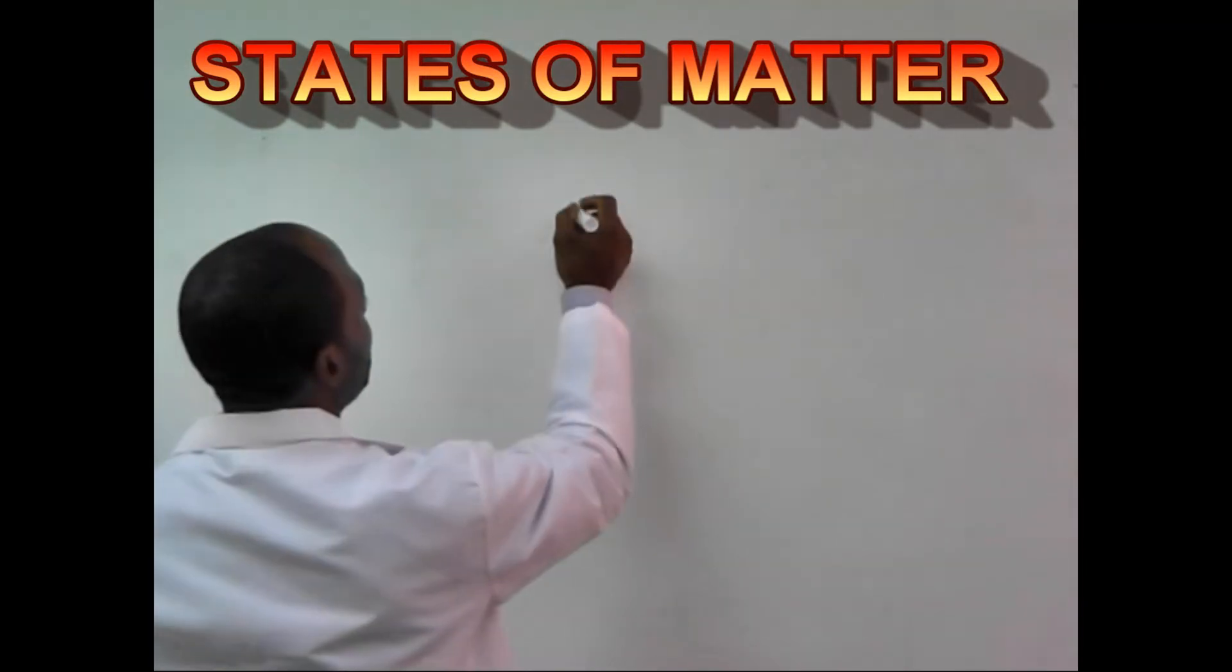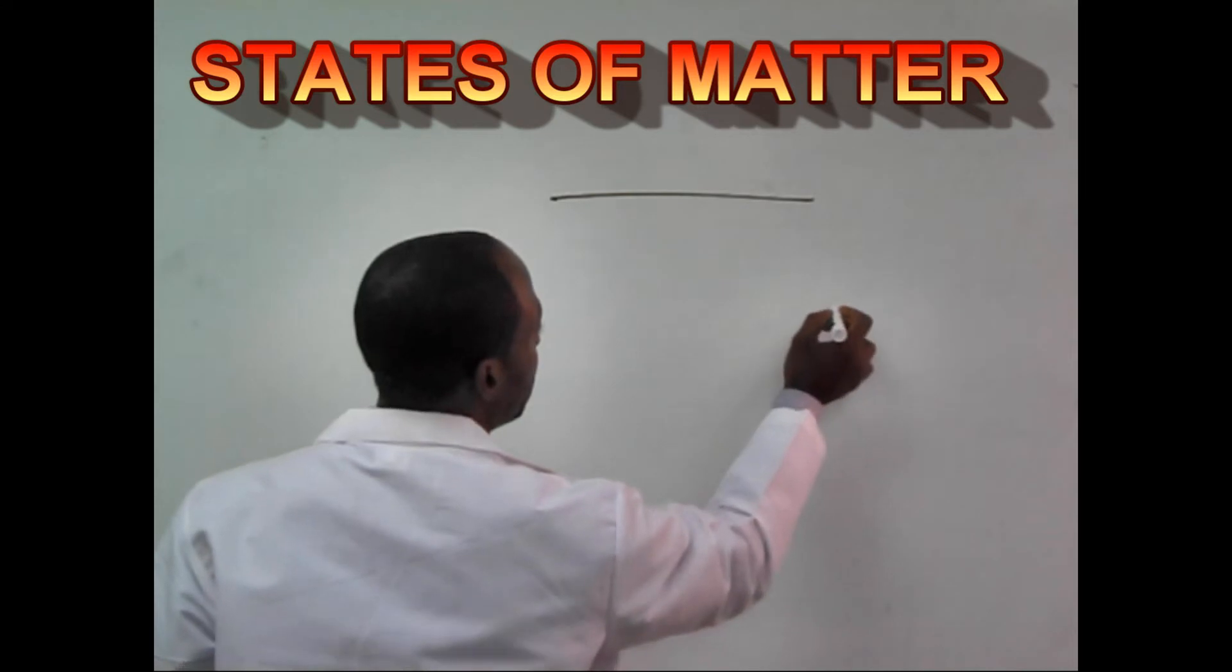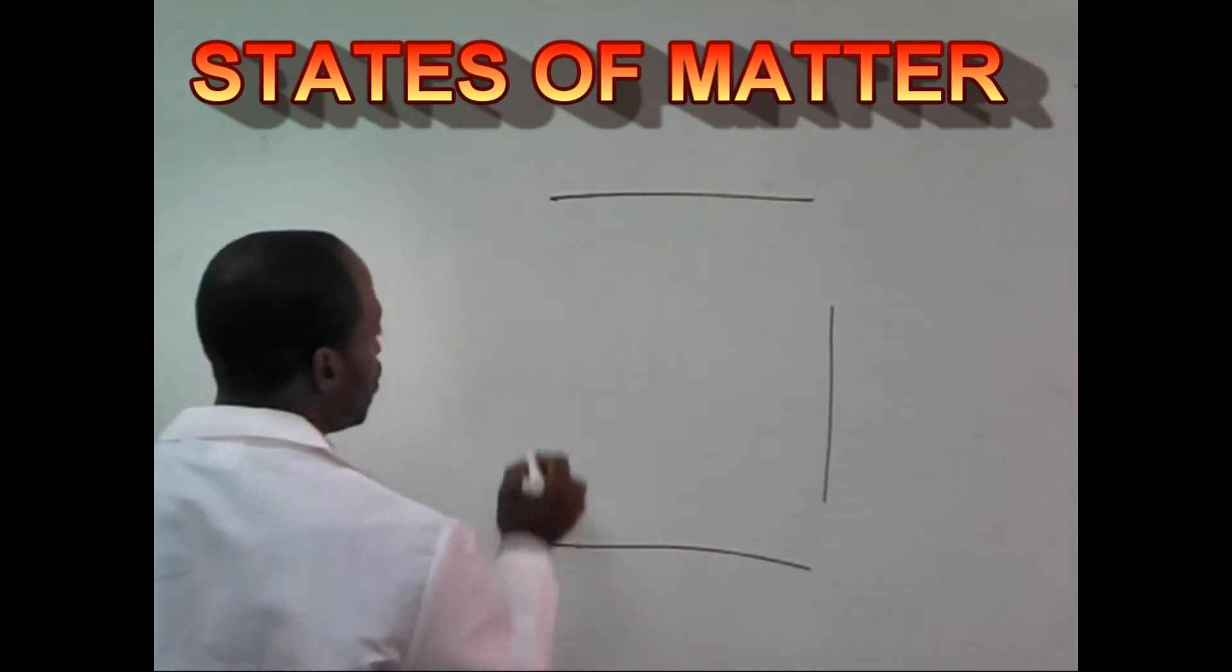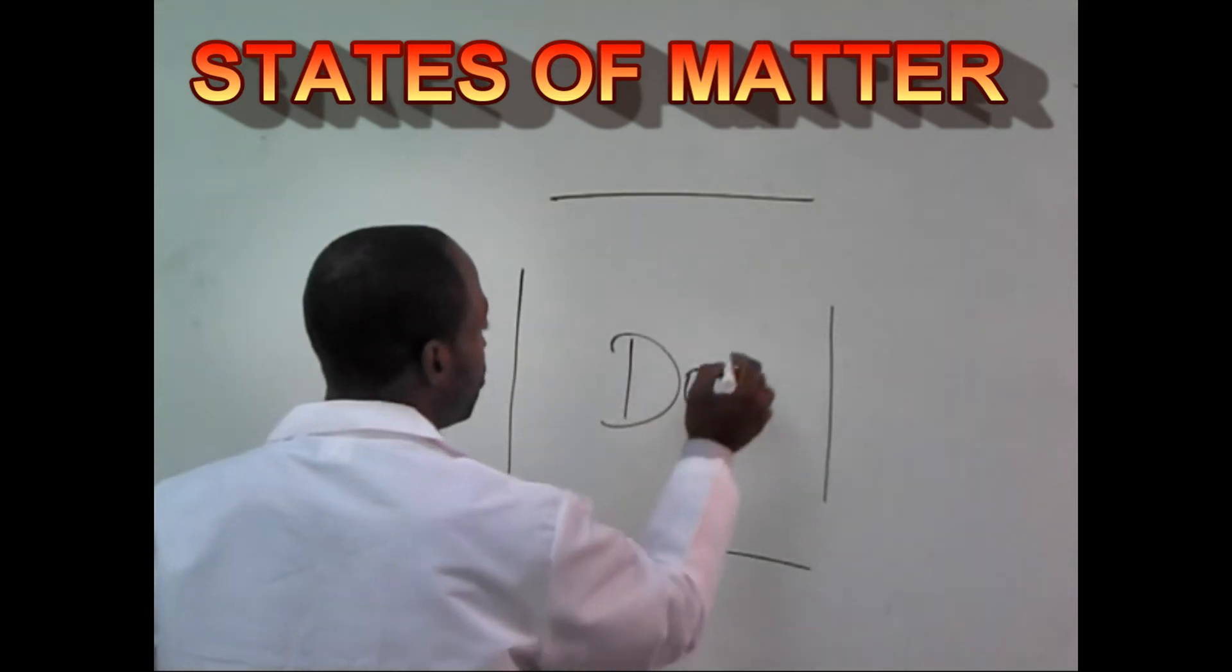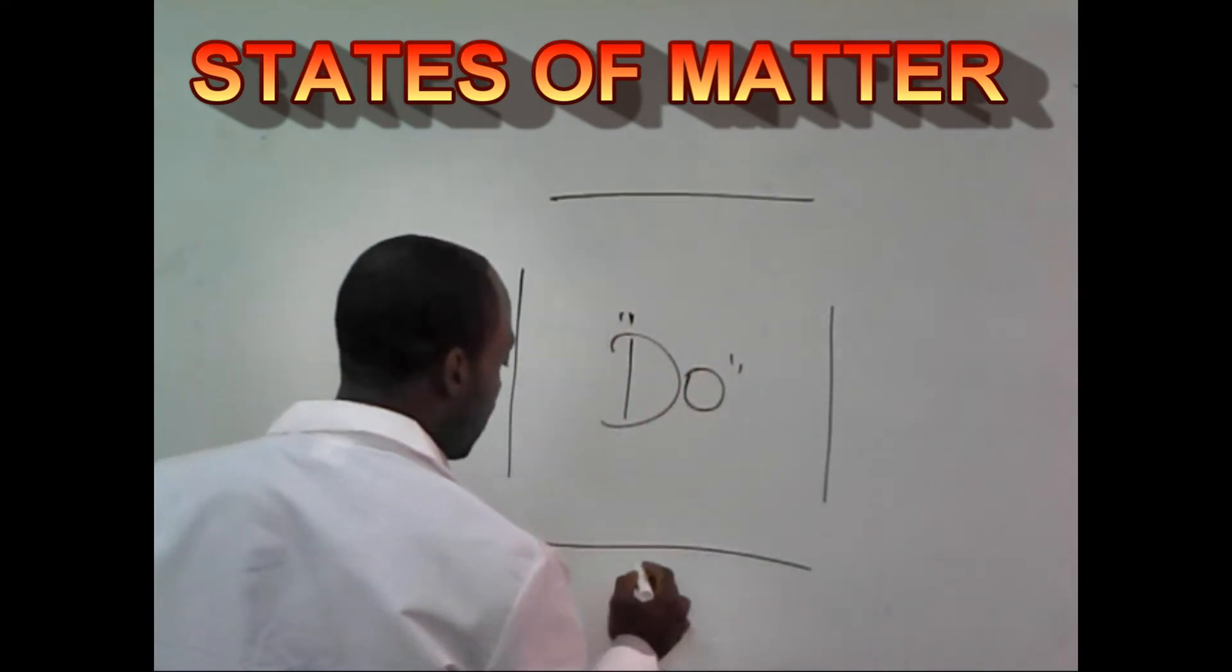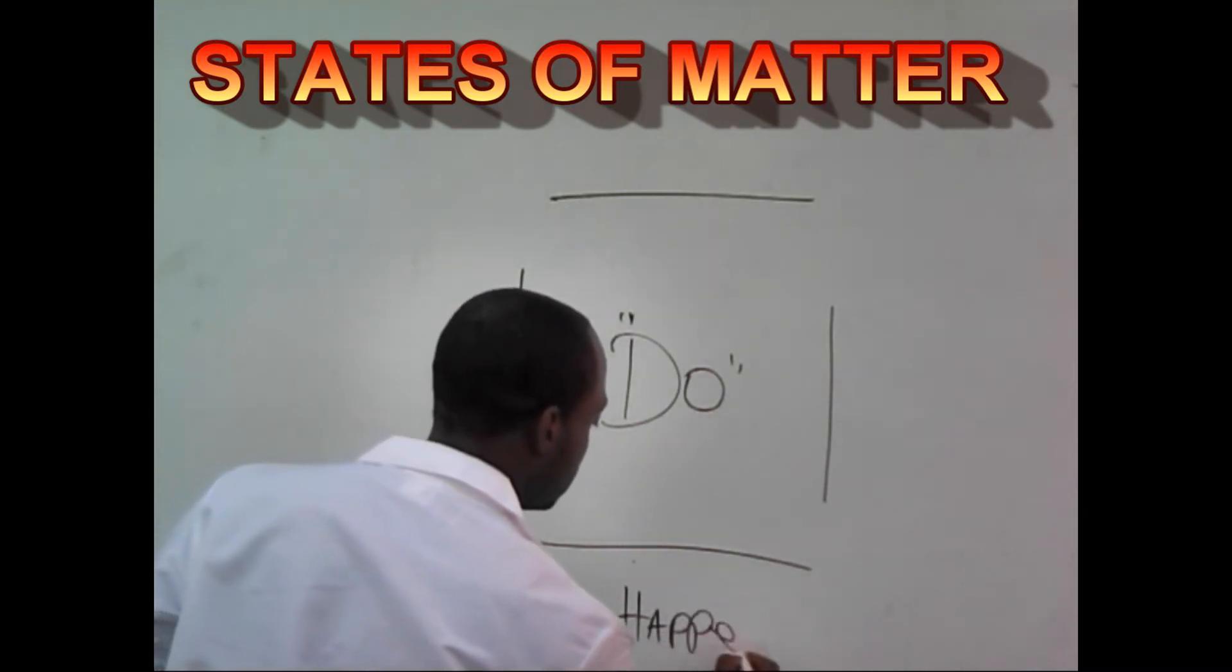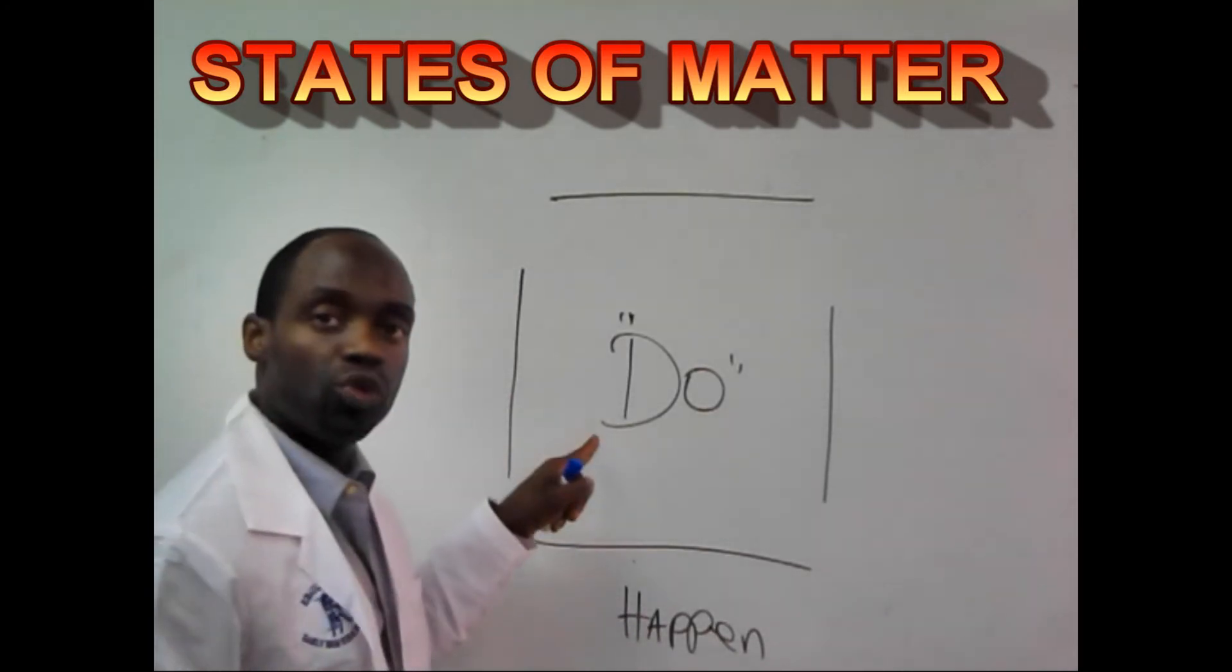First thing you want to do is you just want to draw a box and leave an opening in between here. Leave an opening in between when you do your box. Inside here I'm going to put the word do. And out here I'm going to put happen. For something to happen you must do something.